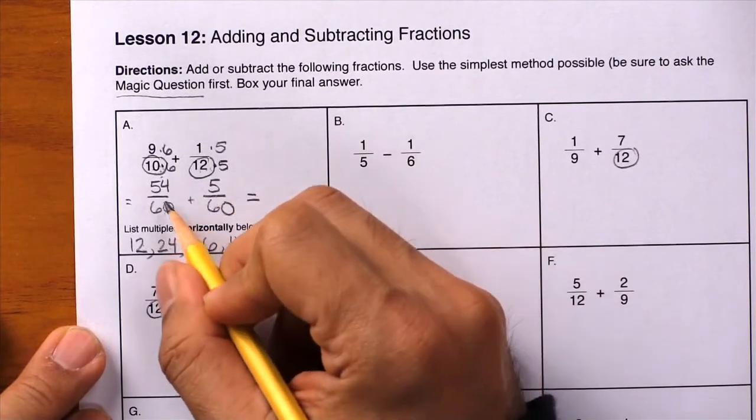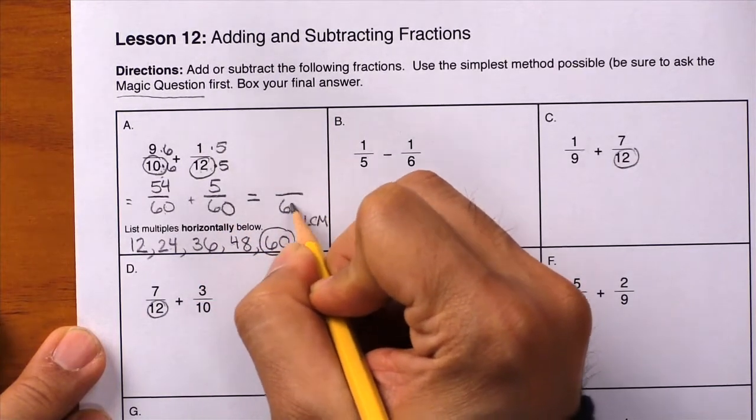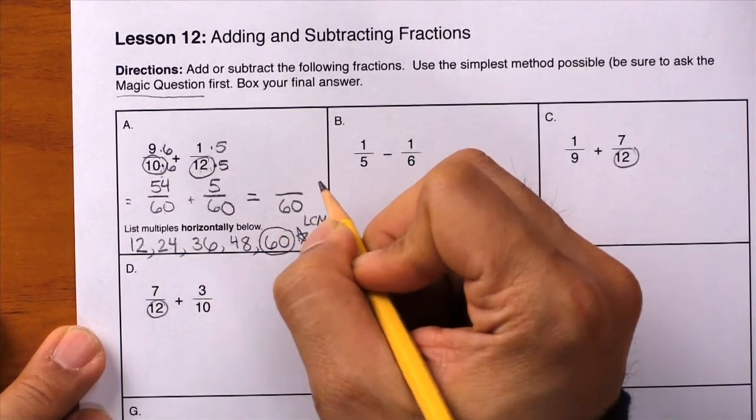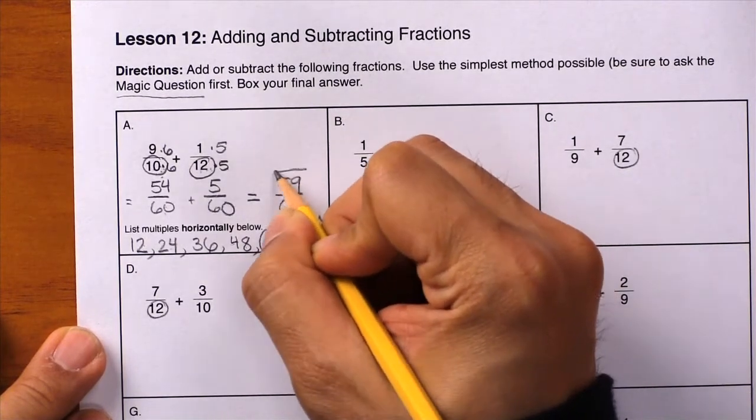Now just think apples plus apples. 60ths plus 60ths give you 60ths. How many 60ths? We have 59/60. Box your answer.